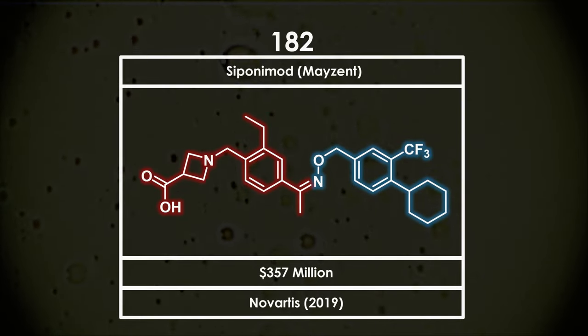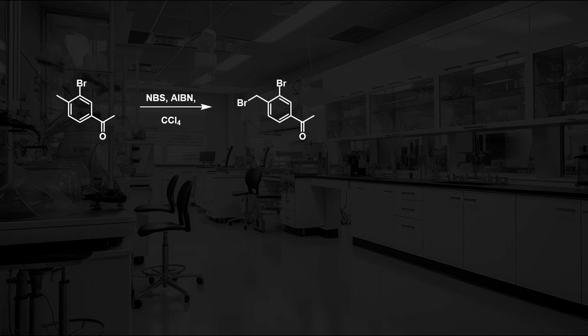The synthesis of siponimod is broken up into two fragments. The synthesis of the first fragment begins with a benzylic bromination of this starting material using NBS and AIBN as a radical initiator. The benzylic bromide is then converted to the benzylic alcohol per reaction with cesium carbonate in water.